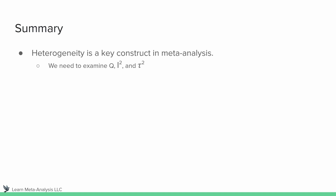The takeaway: heterogeneity is really important in meta-analysis. We need to examine three key statistics — Q, I-squared, and tau-squared — and they each tell us different things. What you'll most often see reported is the Q statistic and I-squared, but tau-squared is also important. If you're running meta-analyses, please consider your tau-squared as well. This concludes our video on heterogeneity in meta-analysis. I hope you found these explanations helpful, and I look forward to seeing you in the next video.